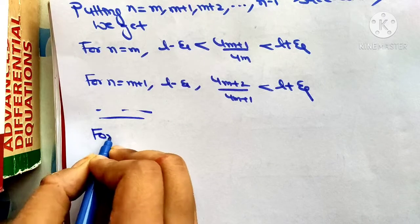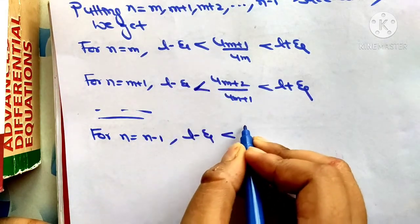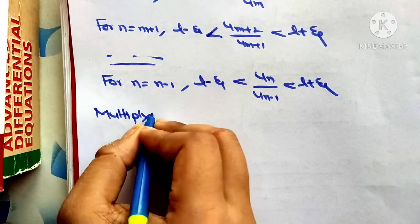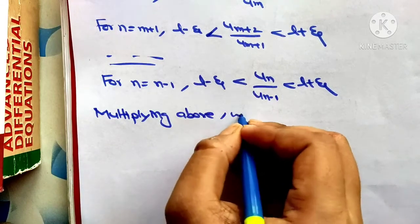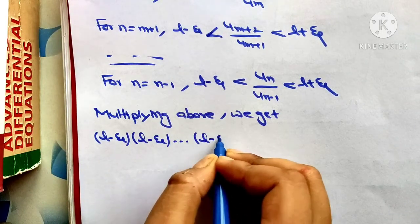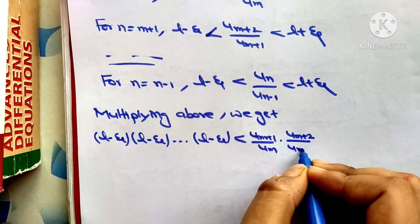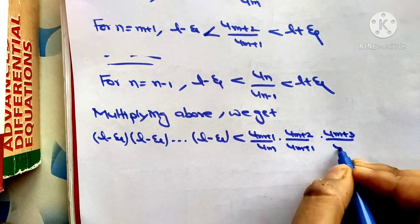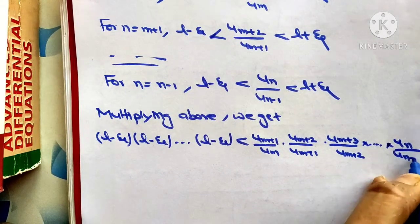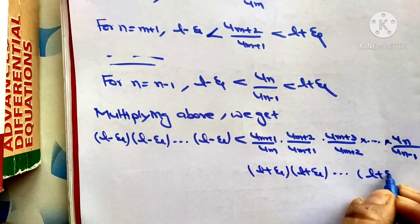Similarly, for n equal to n minus 1: l minus epsilon less than a_n / a_{n-1} less than l plus epsilon. Multiplying all these inequalities together, we get (l minus epsilon)^{n-m} less than (a_{m+1}/a_m) · (a_{m+2}/a_{m+1}) · (a_{m+3}/a_{m+2}) · ... · (a_n/a_{n-1}) less than (l plus epsilon)^{n-m}.